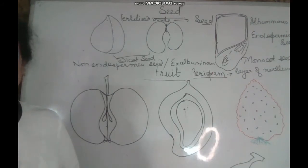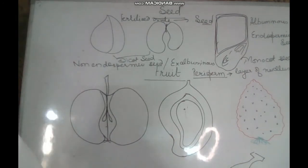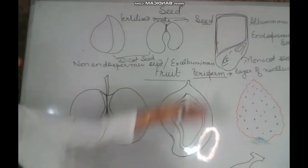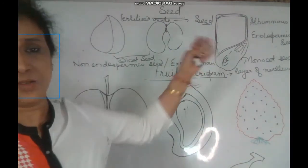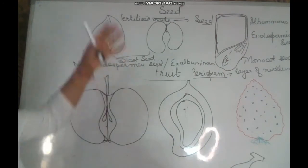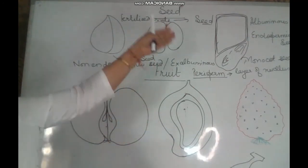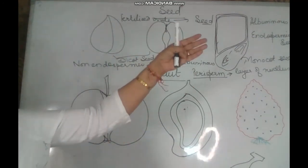Rice, wheat, maize, and bajra are all endospermic seeds. All pulses are dicotyledon seeds. So they are a staple food type.